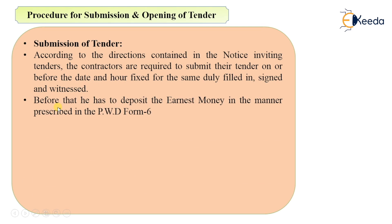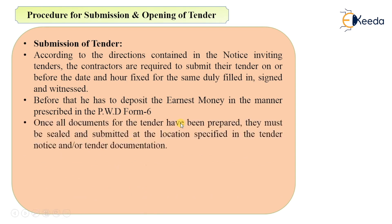Before submitting, the contractor has to deposit the earnest money in the manner prescribed in Form Number 6 of PWD. The earnest money amount is mentioned in the tender notice, and this is the second requirement.